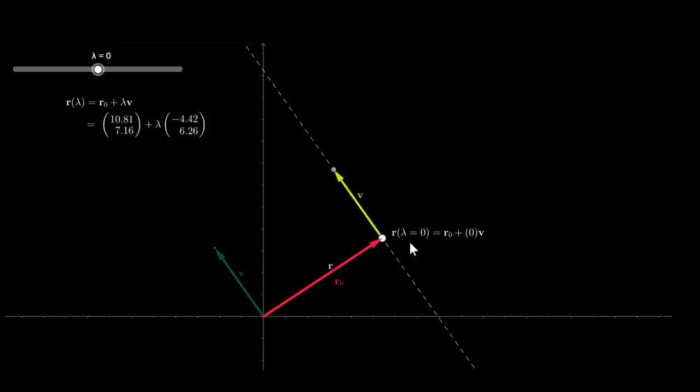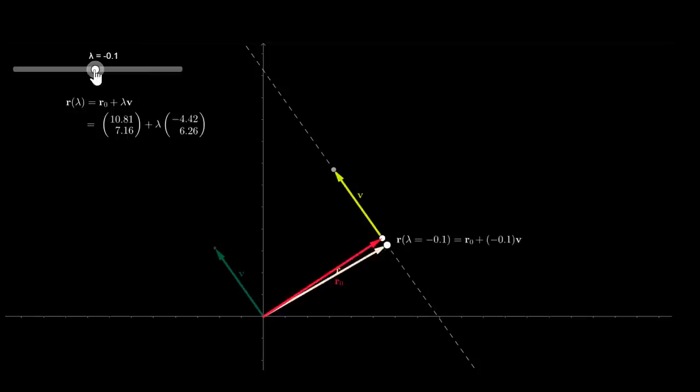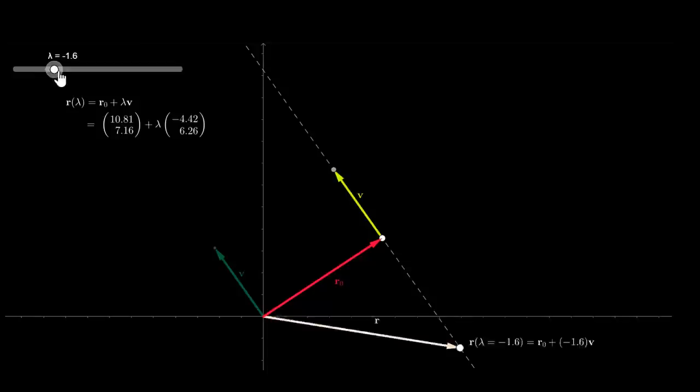For example, when lambda equals 0, then r equals r0. When lambda equals 1, then r equals r0 plus v. If lambda equals -1, we get r0 minus v. And in general, any value of lambda gives us a different point along the line. The line is infinite and so are the possible values of lambda.